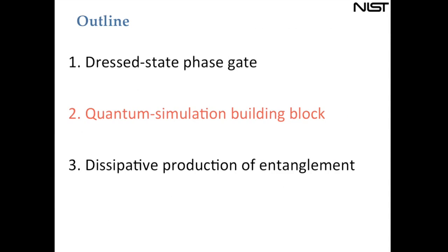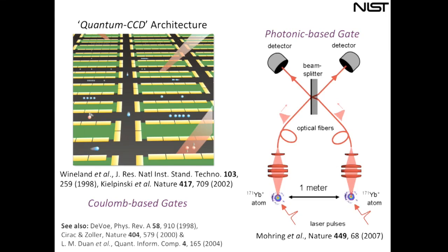Now I want to switch gears and talk about how some of these ideas relate to quantum simulation — specifically our implementation of a building block for quantum simulation experiments. When thinking about scalable quantum information experiments, we imagine a large microfabricated trap configuration with many electrodes, where we focus laser beams on pairs of atoms for gate operations and shuttle ions around, combining them into trapping potentials to perform gate operations.